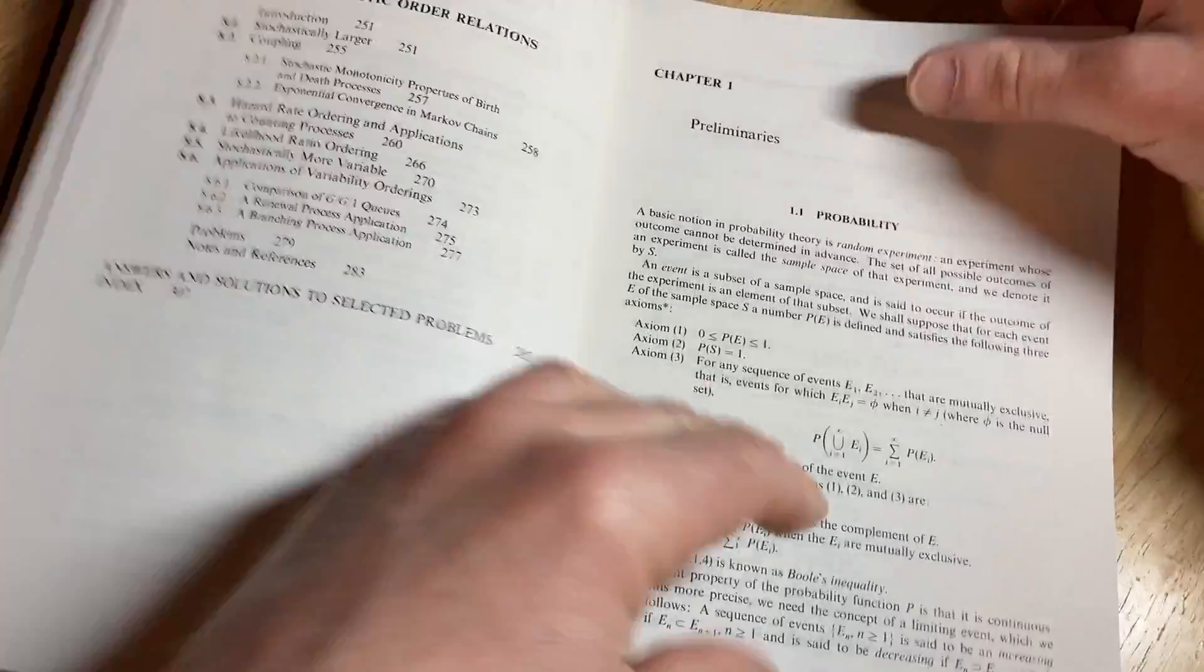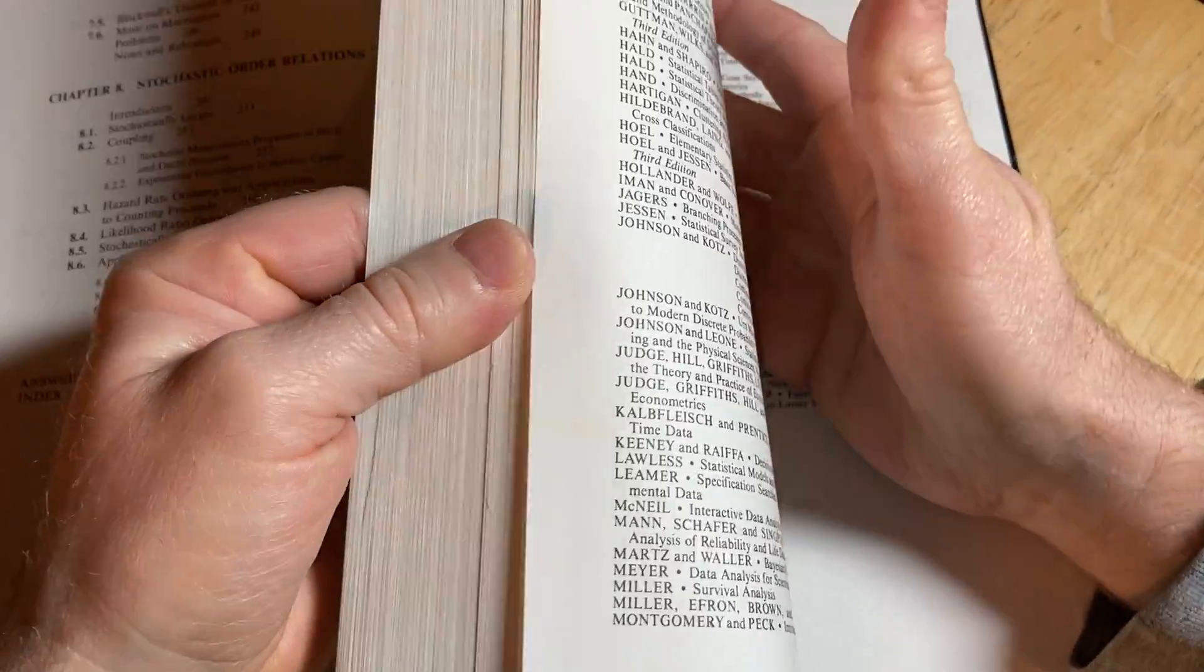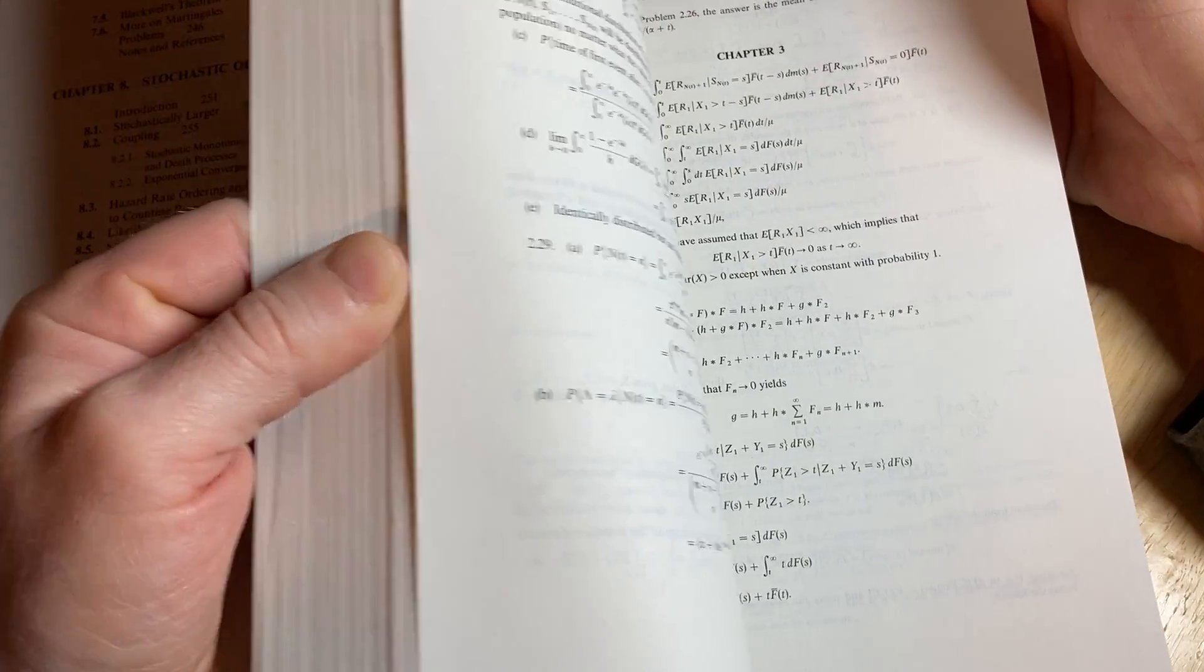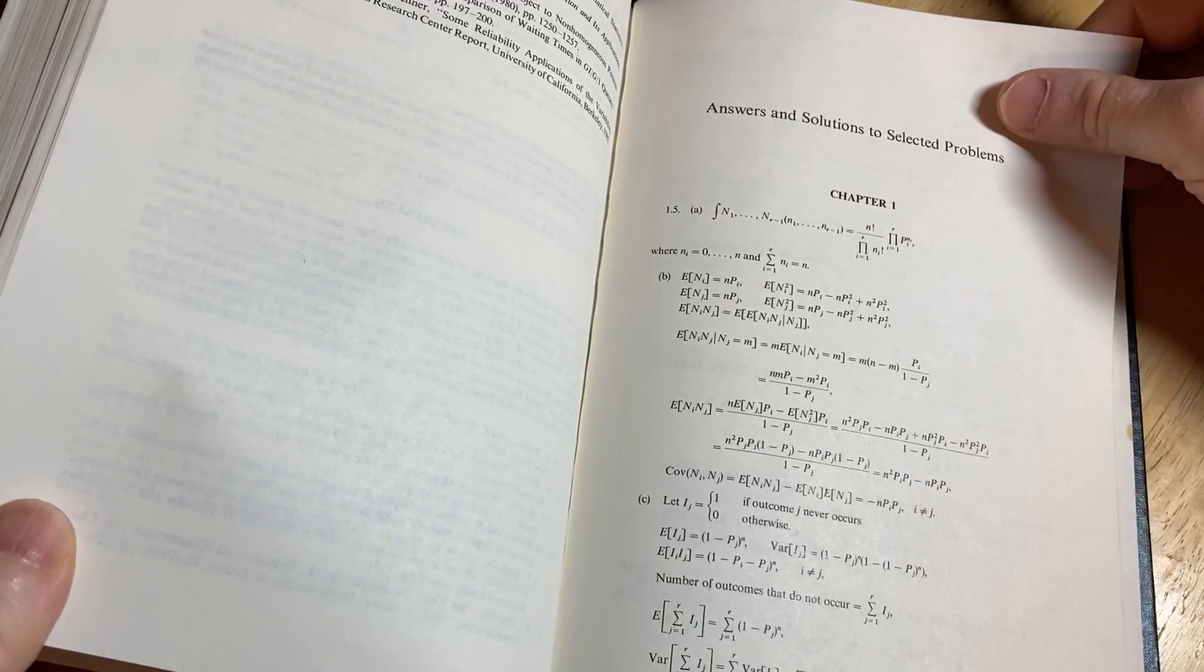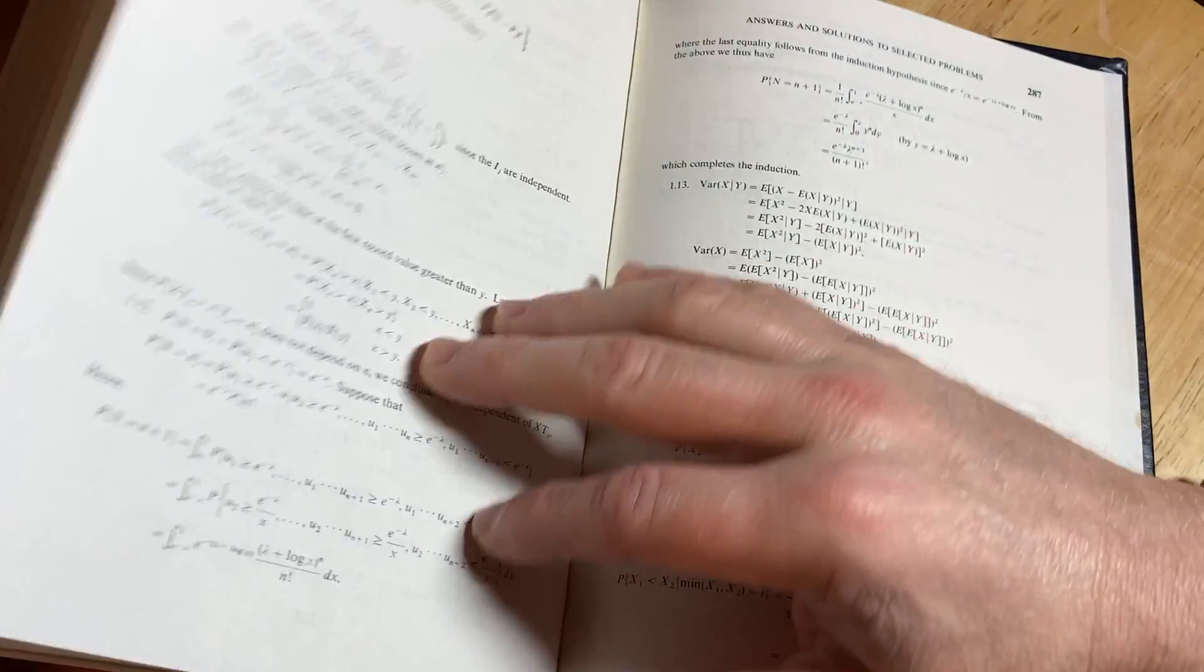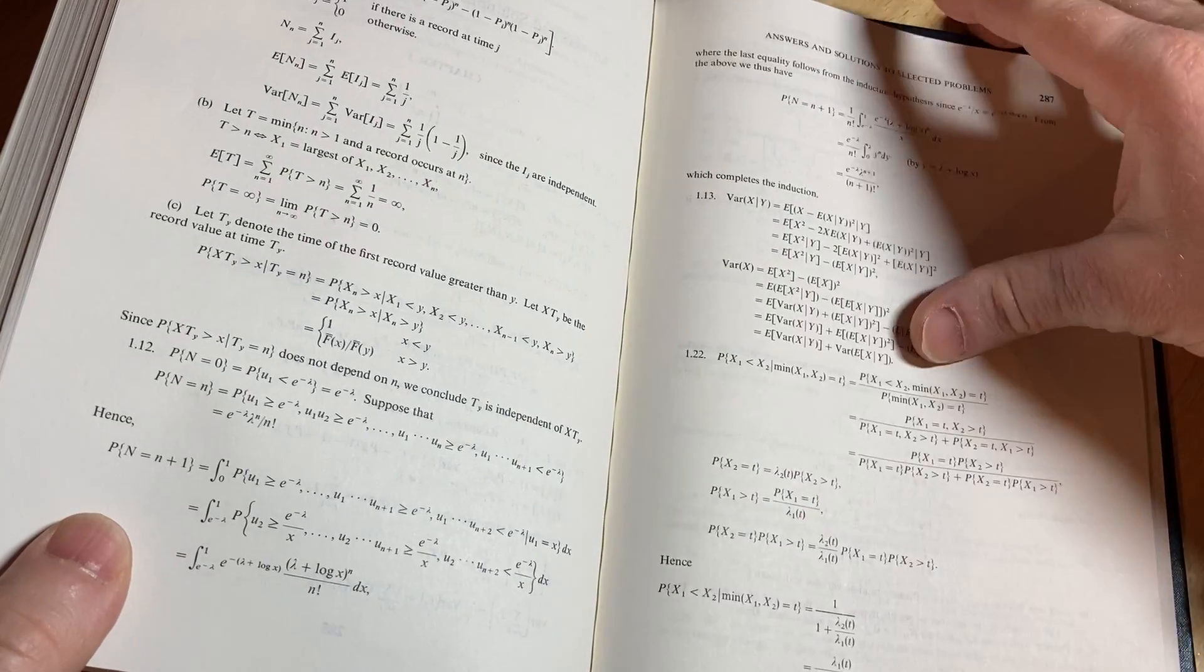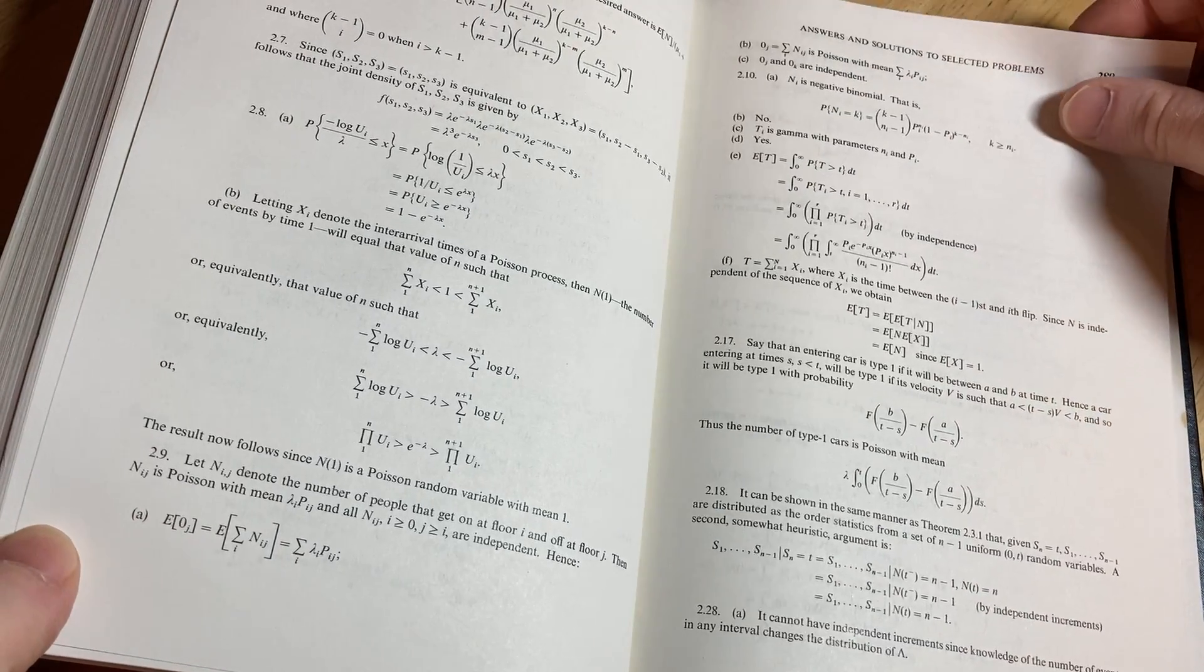Answers and solutions to selected problems. Let's jump there. So 285. Now, obviously, when I learned this stuff, I had a teacher too. So that makes a big difference. You can see here there are some answers in the back. And Ross does take his time and go through and show a lot of the stuff. That's very helpful.